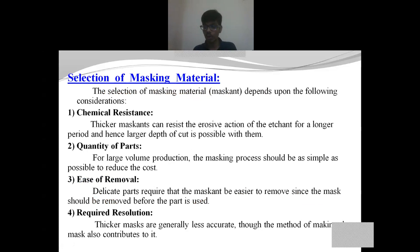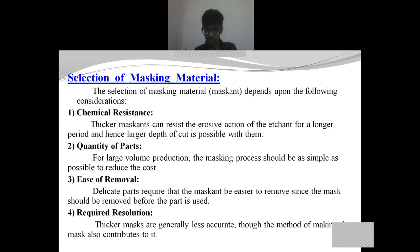Next is the selection of masking material, which plays a crucial role in chemical machining. The first consideration is chemical resistance. The chemical resistance of the masking material depends on the thickness of the mask layer applied. Generally, thicker mask layers resist the chemical action for a longer period, and thinner sections resist for a shorter period. If the etchant is more corrosive, we must use thicker mask layers, and if it is less corrosive, thinner layers suffice. We must arrive at the optimum thickness to achieve profitability in the manufacturing process.